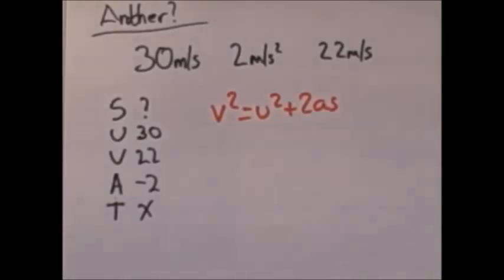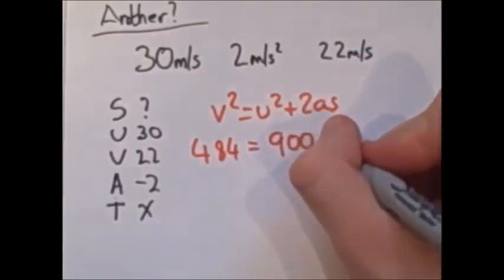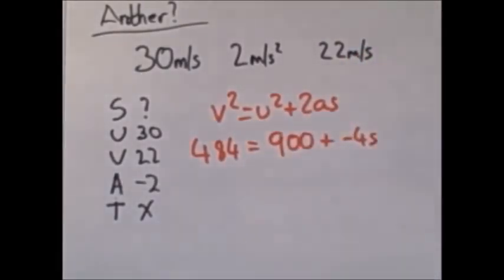But the formula needs rearranging. We can either rearrange it now or see how it plays out. I think we are just going to see how this plays out. V squared, or 22 squared, would be 484. And then this is equal to 30 squared, plus 2 times minus 2, because it is deceleration, times S.